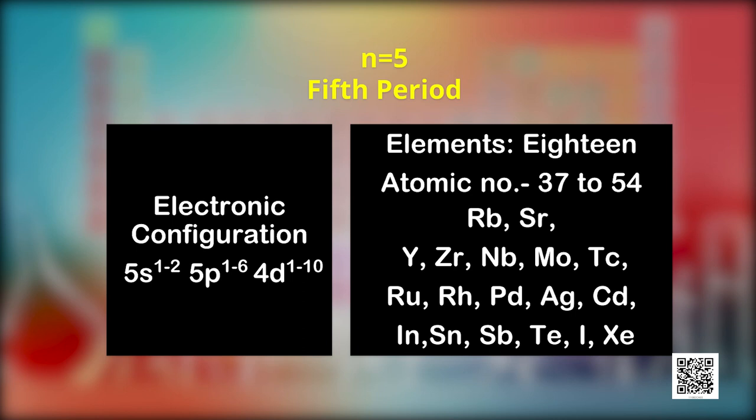The fifth period, like the fourth, contains 18 elements, since only nine orbitals — one 5s, five 4d, and three 5p — are available for filling with electrons. It begins with rubidium (atomic number 37), where one electron enters the 5s orbital. After filling of 5s, the 4d orbital filling starts at yttrium (atomic number 39) and ends at cadmium (atomic number 48), constituting the 4d transition series. Thereafter, filling of 5p starts at indium (atomic number 49) and ends at xenon (atomic number 54).